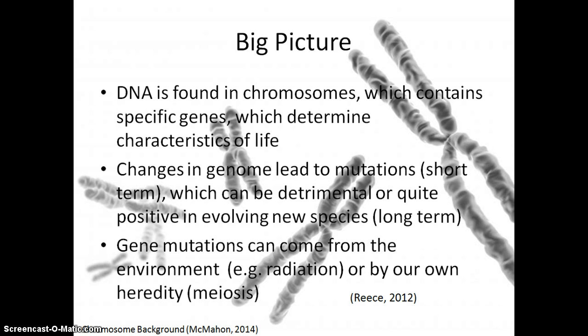DNA is found in chromosomes, which is condensed chromatin found in the nucleus, each containing specific genes that determine characteristics of life. Changes in this genetic genome lead to mutations, which can be detrimental or quite positive in evolving species over time — mutations being short-term, and evolution being long-term.